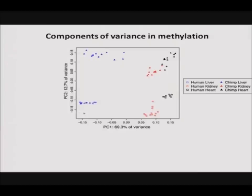When we look at autosomal probes, the major components of variance correspond to differences between tissues and species. This principal components plot shows the first two components of variance for all samples — human samples as unfilled squares and chimpanzee samples as filled triangles, with each color representing a different tissue. The first component on the x-axis corresponds to tissue differences, while the second on the y-axis differentiates between species. These results recapitulate findings from human-mouse studies and fit our expectations about the biological importance of methylation in tissue differentiation.